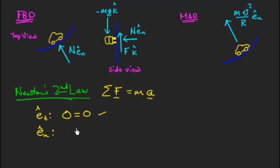Now let's look at what we have in the e hat n direction. You'll notice that I have the normal force of the wall pushing outward, or inward, I should say, towards the middle of the circle. And that's all in the e hat n direction. So this has to equal my mass times acceleration in the e hat n direction. So mass times speed squared divided by radius.